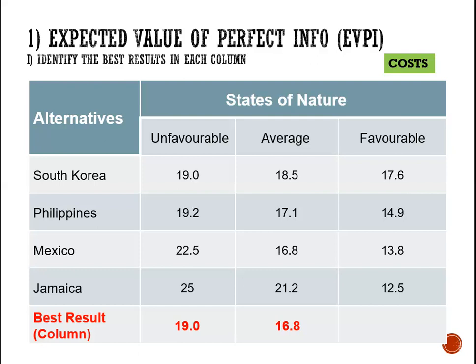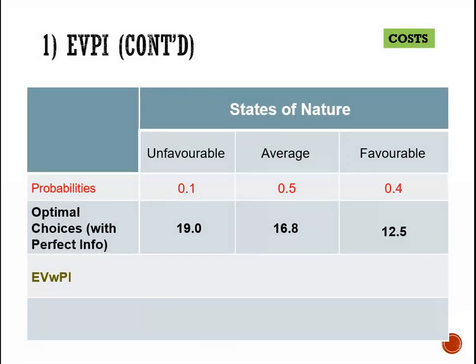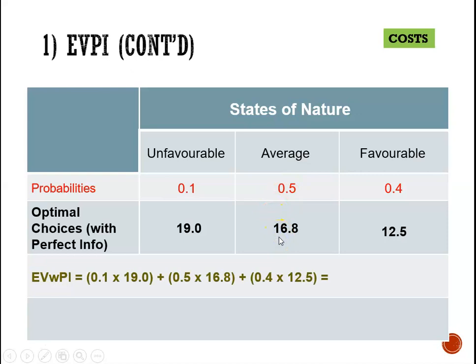In the favorable column, we have 17.6, 14.9, 13.8, and 12.5. The lowest of which is 12.5 million. So these are our best possible results from each of the states of nature. Next, we are going to incorporate the probabilities and multiply each value by its associated probability and total the results. So for our expected value with perfect information, we are going to say 0.1 multiplied by 19, plus 0.5 multiplied by 16.8, plus 0.4 multiplied by 12.5. This of course gives 15.3 million.